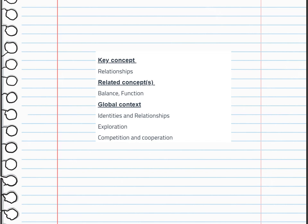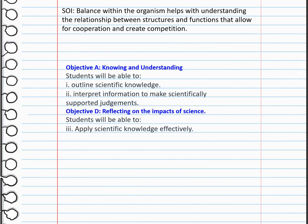The main concept, related concepts, and global context of this unit are relationships, balance, function, identities, and relationship with the exploration of competition and cooperation. The statement of inquiry for this entire unit is: balance within the organism helps with understanding the relationship between structures and functions that allow for cooperation and create competition between organisms. During this unit, you will be assessed on two criteria: Criterion A, which is knowing and understanding — a paper and pencil exam preceded by a formative assessment — and Criterion D, reflecting on the impact of science, for which you will have a project.